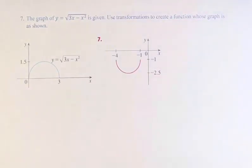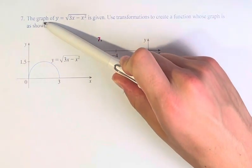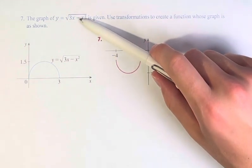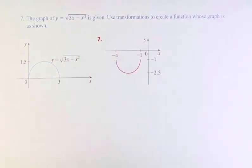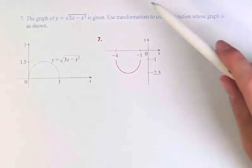Hello and welcome back to another video. In this problem, we're told that the graph of y equals the square root of 3x minus x squared is given, and we're asked to use transformations to create a function whose graph is as shown.